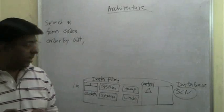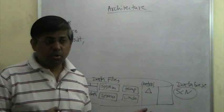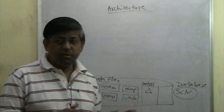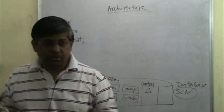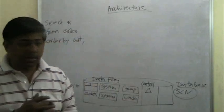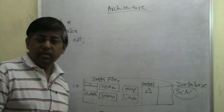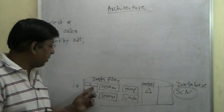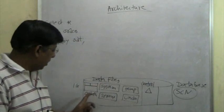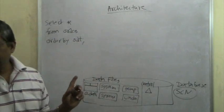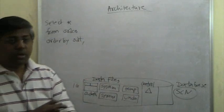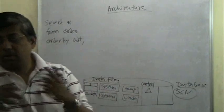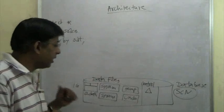The control file is a binary file — if you open it in Notepad or VI, you will see gibberish. You will not see anything readable. Similarly, the data file is also a binary file. If you open up a data file in VI or Notepad, you will not be able to see any rows in the orders table. It is all gibberish because it is a binary file.